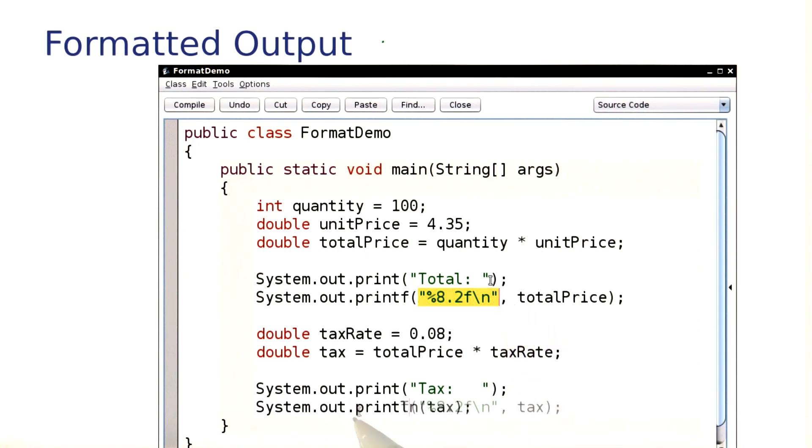Let me do just that. So here again, I'm using printf. I'm saying I want field width 8, 2 digits after the decimal point.